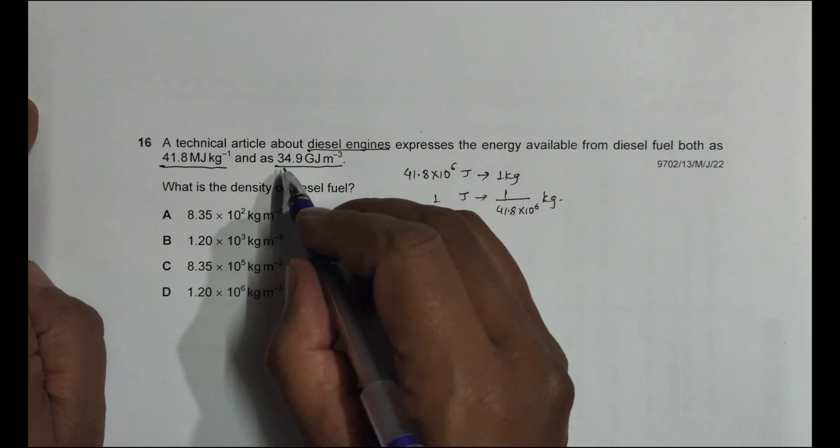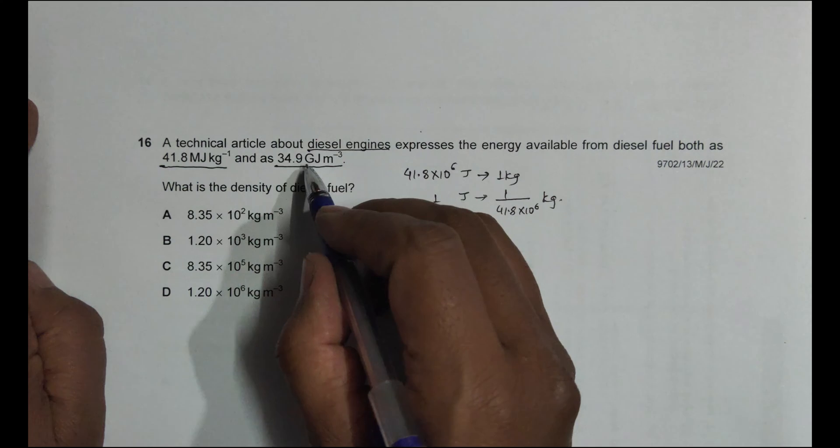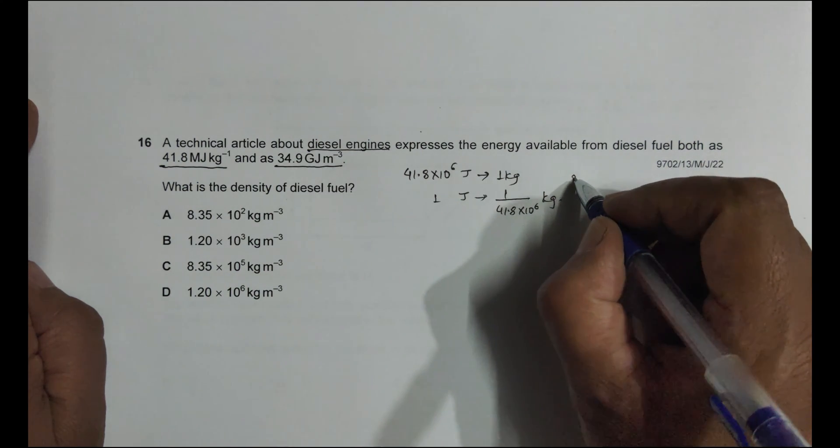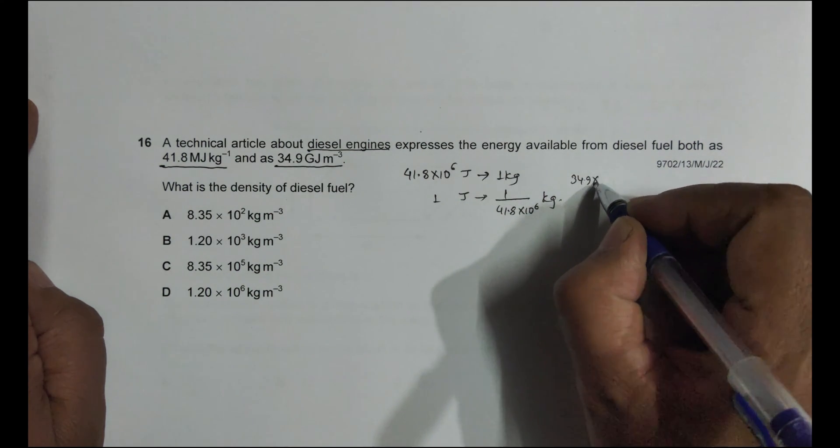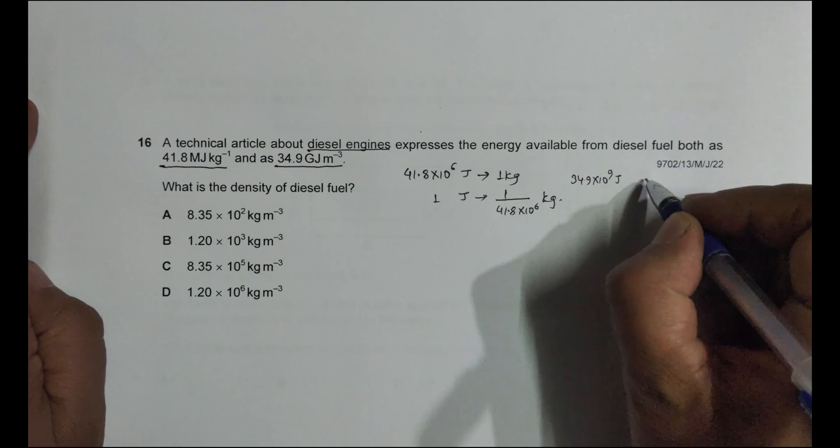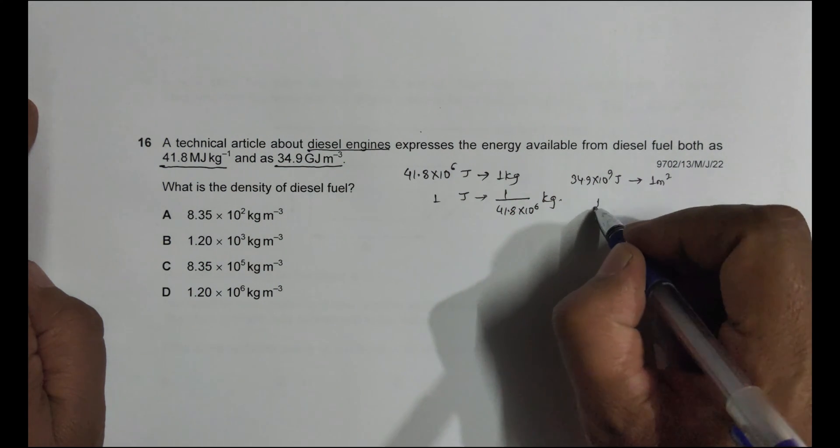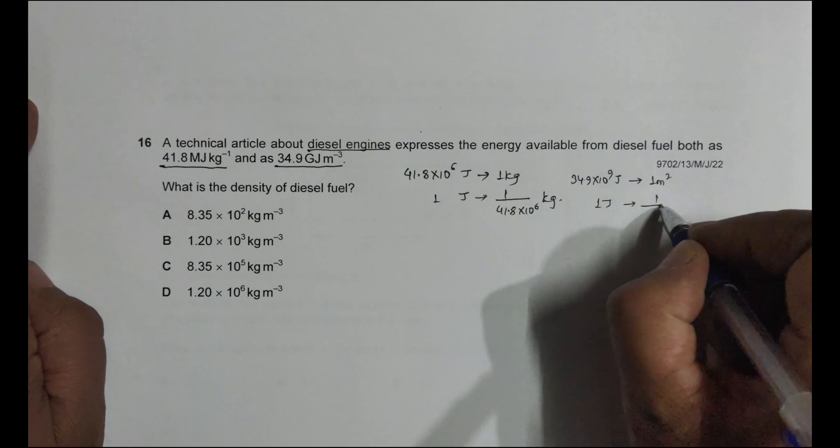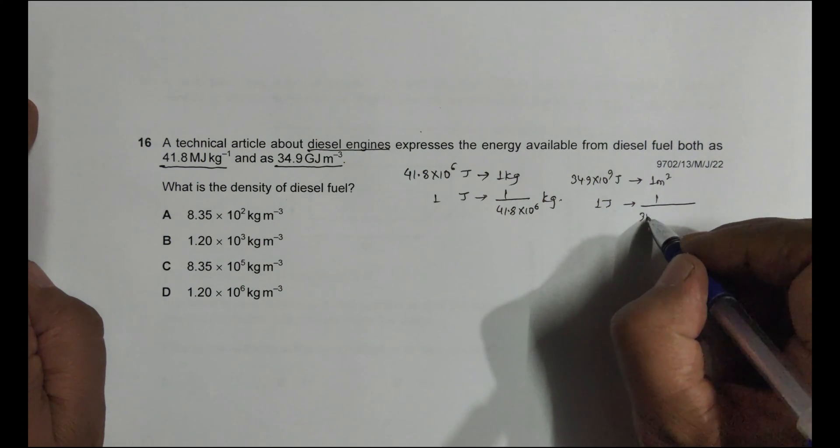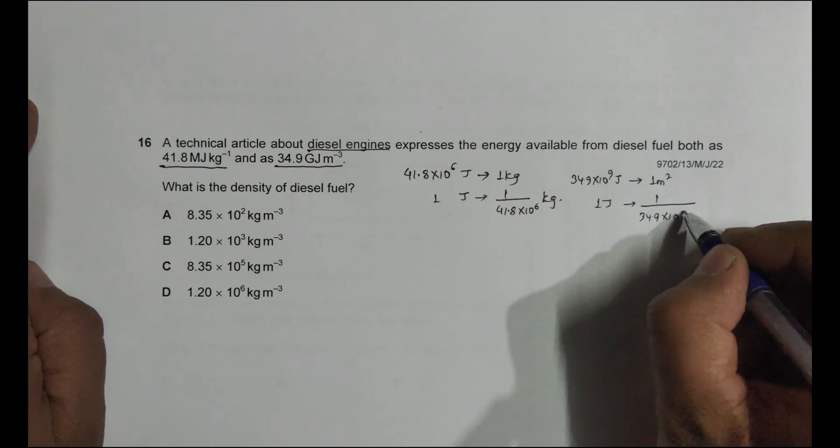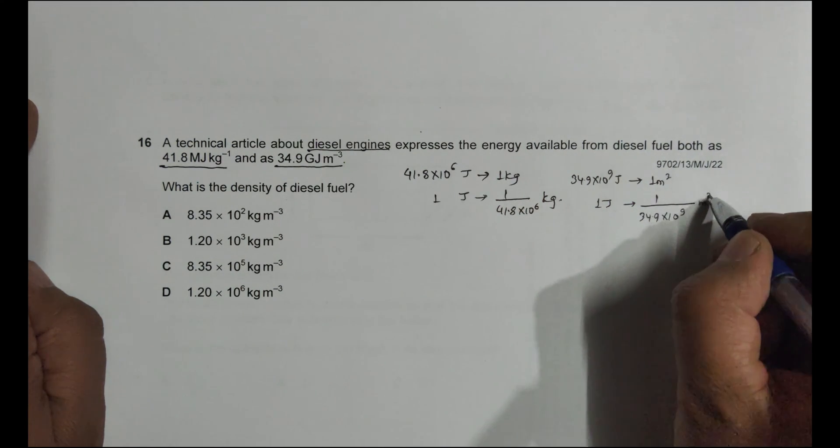Similarly, we have got 34.9 gigajoule. So giga means 10 to the power 9. So 34.9 into 10 to the power 9 joule is equivalent to 1 meter cube. So that means 1 joule is equivalent to 1 by 34.9 into 10 to the power 9 meter cube.